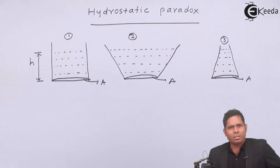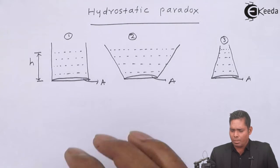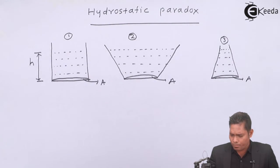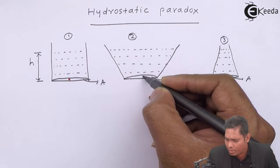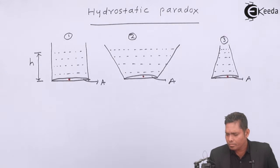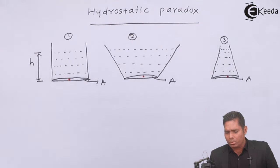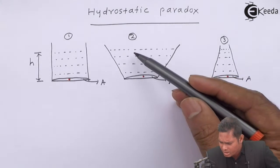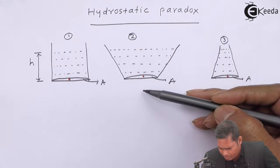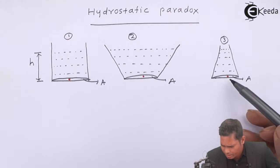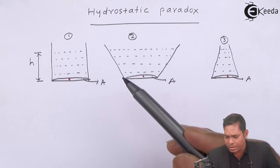So, by intuition, we say: what is the pressure developed at the bottom of each vessel? If we want to find the pressure at the bottom, by formula we know that more mass means more force. Since vessel two has more mass, it should exert more pressure. So by intuition, the pressure in vessel two should be greatest, then vessel one, and vessel three should have the least pressure.